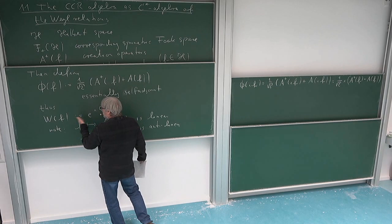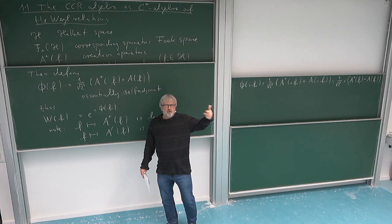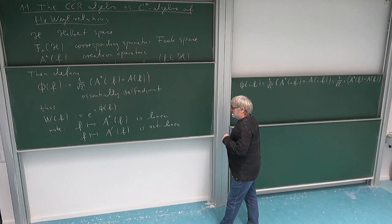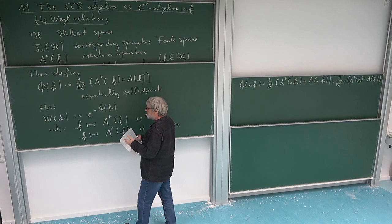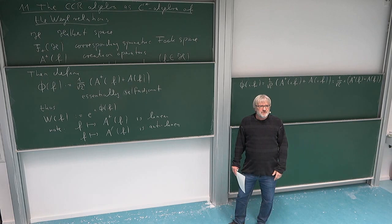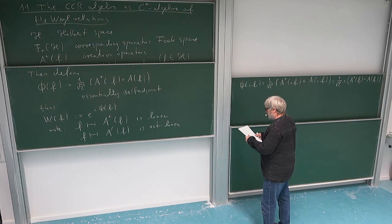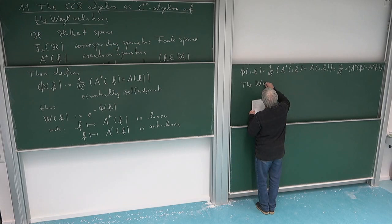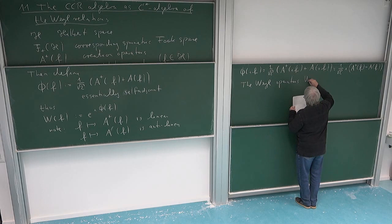So W(f) = e^{i φ(f)} encodes both the P and the Q — both the unitary groups of P and the unitary groups of Q, which we previously called U and V. And what we call W here is essentially the same as what we called W when we proved the Stone-von Neumann uniqueness theorem. So all the information is now encoded in these Weyl operators, which satisfy the Weyl relations.